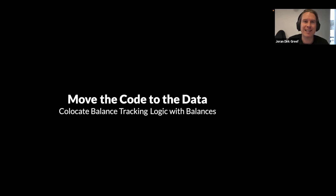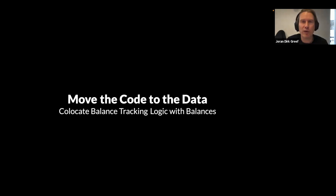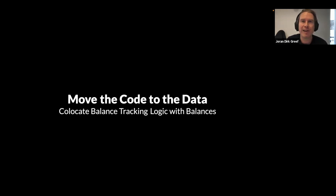The first performance insight is that if you move the financial primitives or business logic to the database, you co-locate the balance tracking logic with the data rather than moving the data back and forth across the network. It's much better to move the code to the data — moving the data to the code is expensive and must be done at runtime constantly. This also laid the foundation for a second insight: give database queries a first-class batching interface, so you can amortize network communication, fsync, context switches, and execute around 10,000 transactions in a single database query.